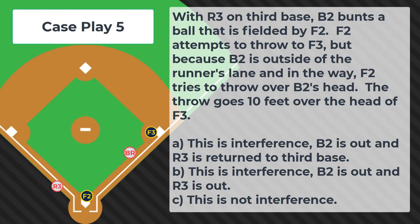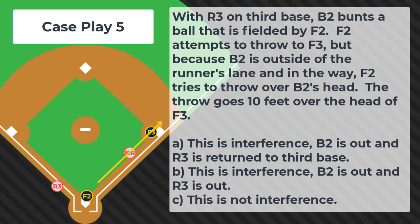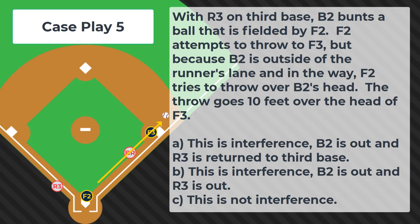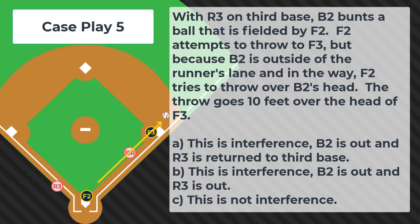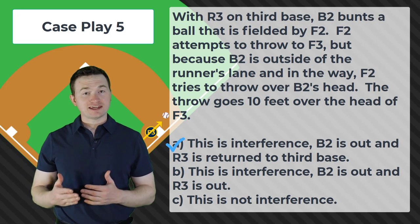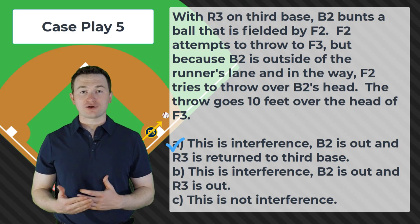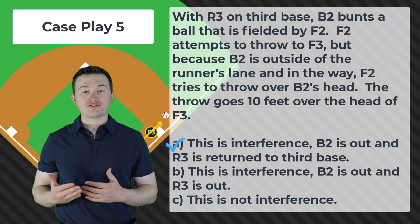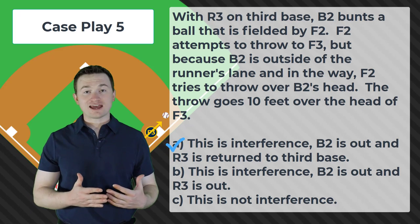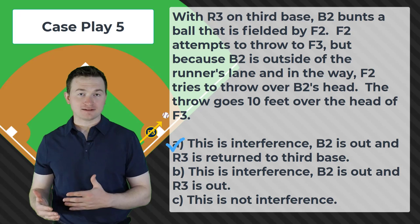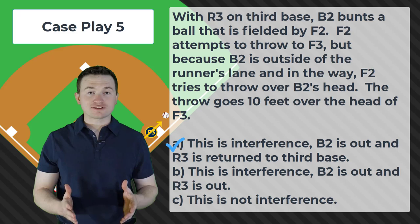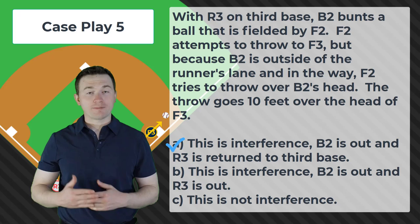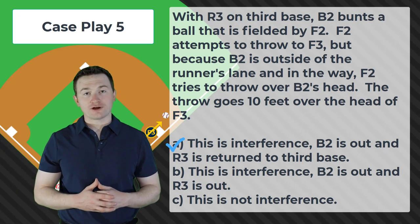Case play number five. With R3 on third base, B2 bunts a ball that is fielded by F2. F2 attempts to throw to F3, but because B2 is outside of the runner's lane and in the way, F2 tries to throw over B2's head. The throw goes 10 feet over the head of F3. Is this A — interference, B2 is out and R3 is returned to third; B — interference, B2 is out and R3 is out; or C — this is not interference? The correct answer is A, this is interference. This is a play that would have a different ruling at other levels of baseball, but for federation rules, whether or not the first baseman is able to field a thrown ball has nothing to do with the enforcement of this rule. So long as an attempt is made to retire the batter runner at first base, if that throw does not retire the batter runner and the batter runner is outside of the runner's lane, they have violated the runner's lane rules. The batter runner will be out and all other runners will be returned back to their position at the time of pitch.